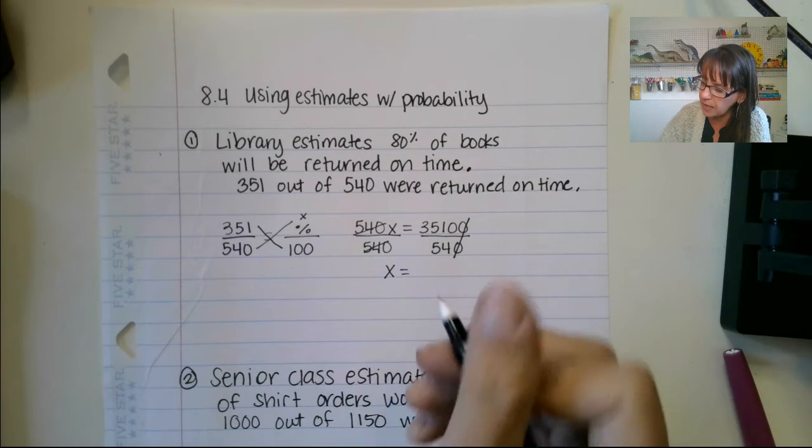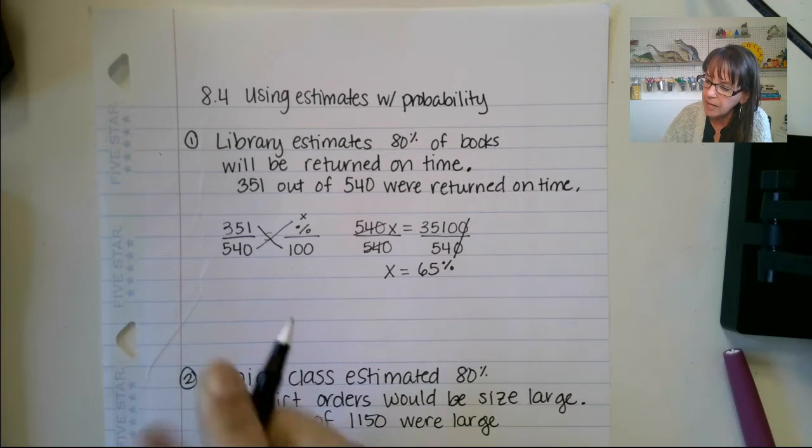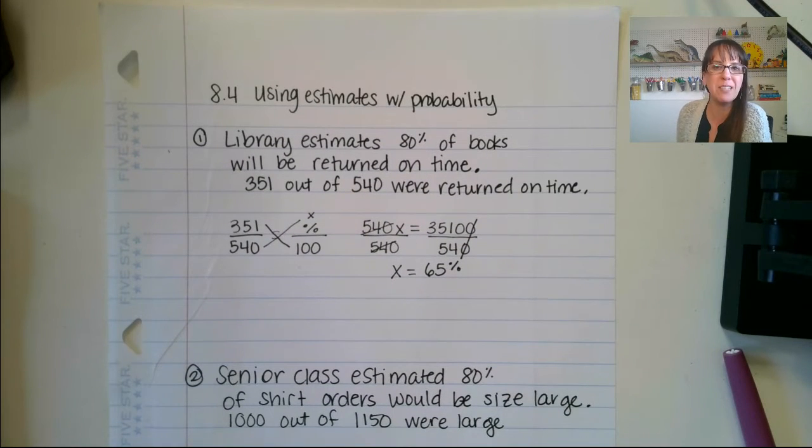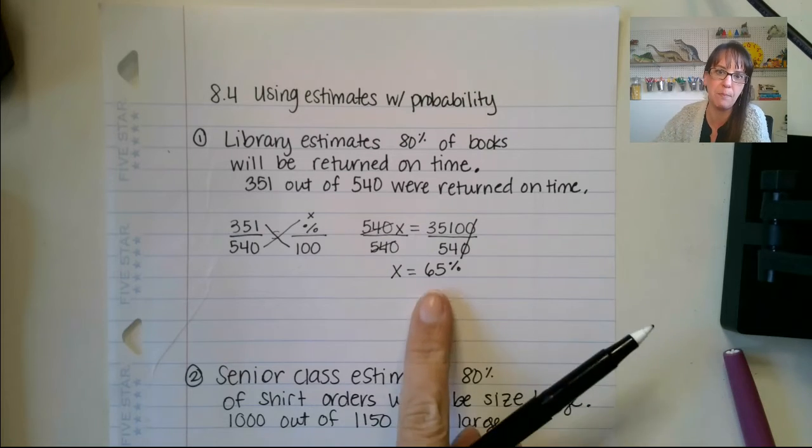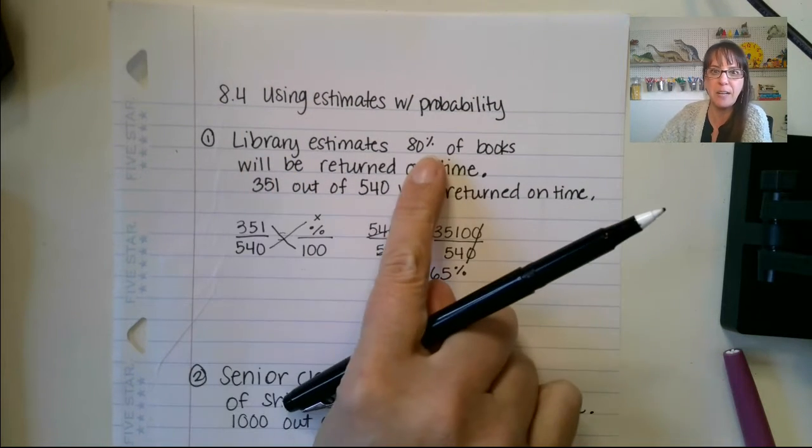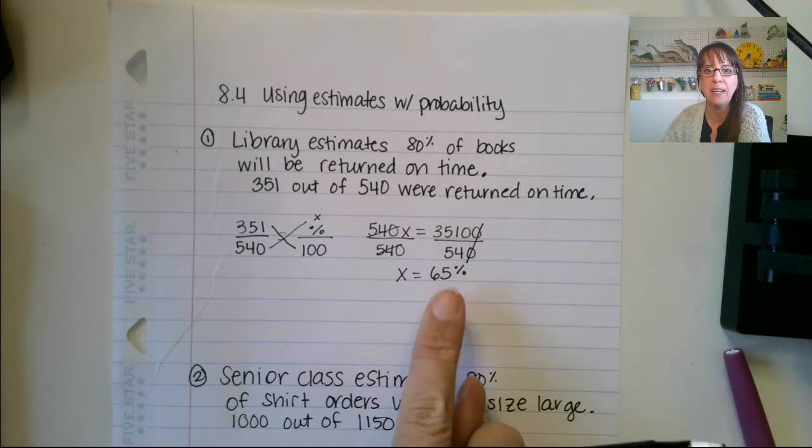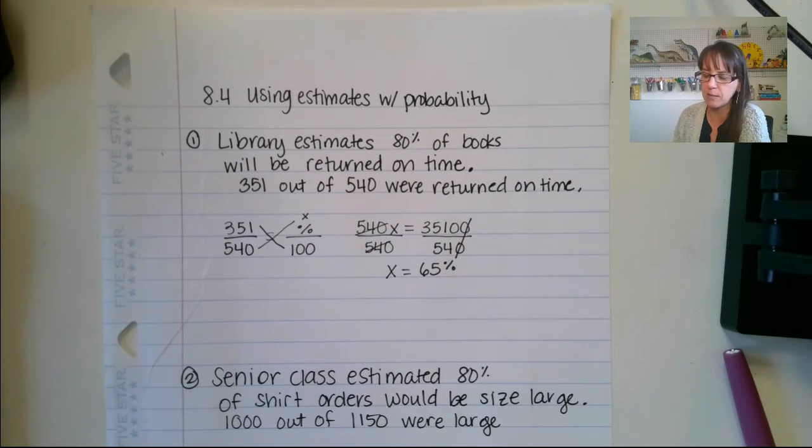All right, and if I divide those, I end up with 65%. So 351 out of 540 books were returned on time. That's only 65% of books on time. So the library estimated 80% would be returned. It's not really a good estimate. We should probably revise our estimate to be closer to 65.